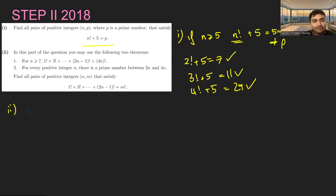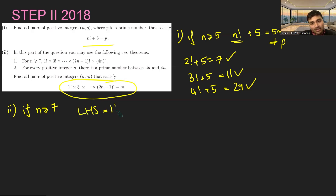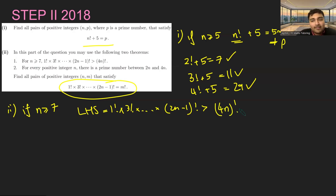Let's look at part two. We want to use these two theorems to work out the number of solutions to this equation. It's going to be a similar vibe where if n or m is sufficiently big, there aren't going to be any solutions. If n is at least 7, we're going to show there are no solutions. The left hand side — 1 factorial times 3 factorial times ... times (2n−1) factorial — is bigger than (4n) factorial. So if this equals m factorial, then m would have to be bigger than 4n.